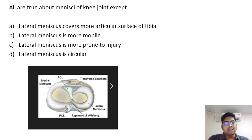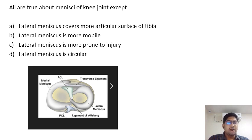In the lateral meniscus, the anterior and posterior horns are very close together, which is why its shape is circular. In the medial meniscus, the anterior horn and posterior horn are far apart, which is why its shape is semicircular or C-shaped.